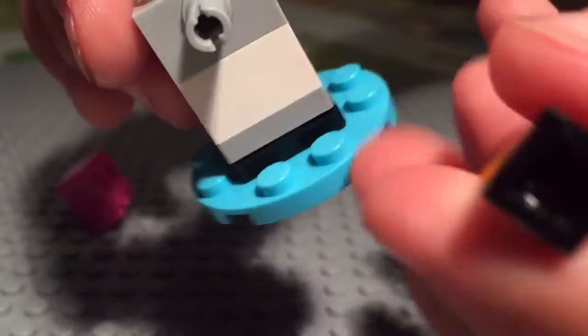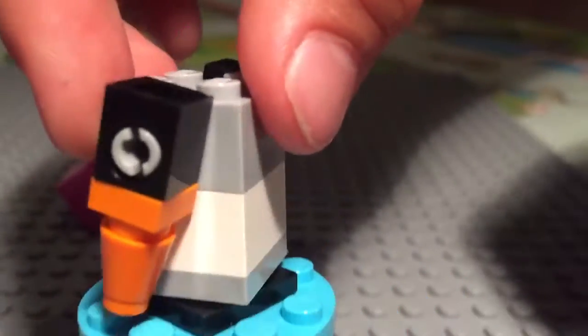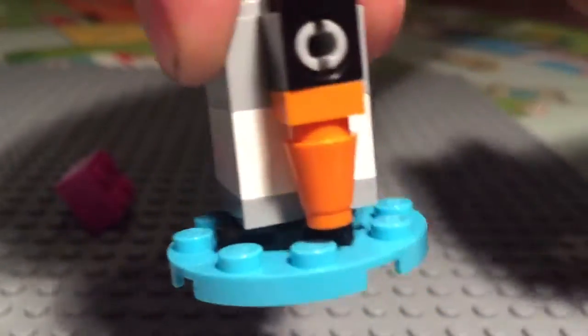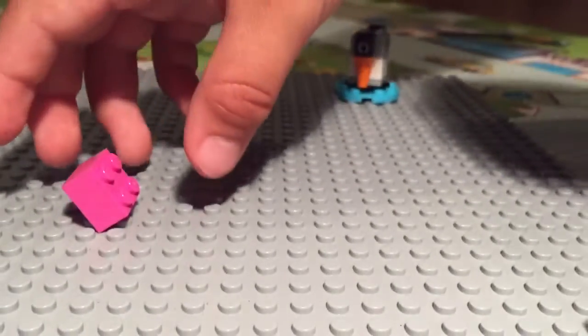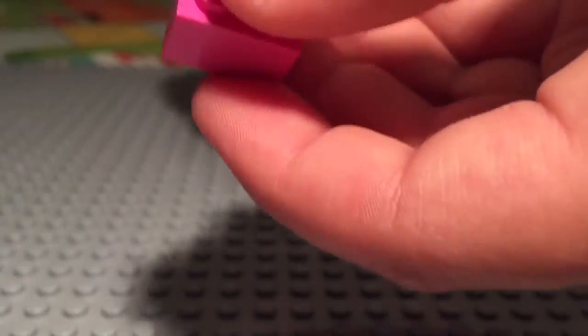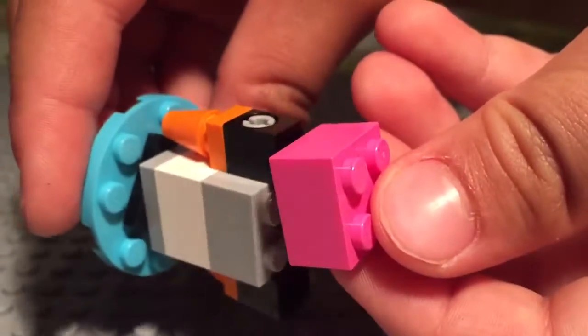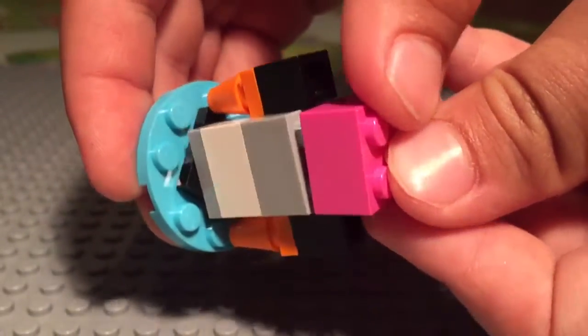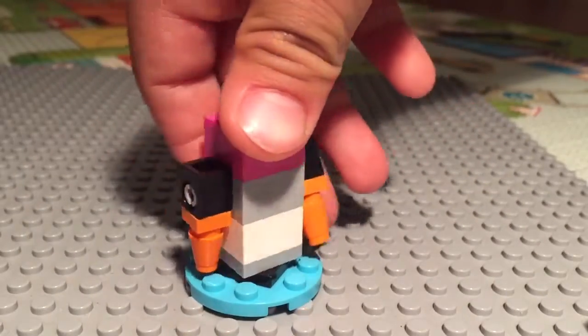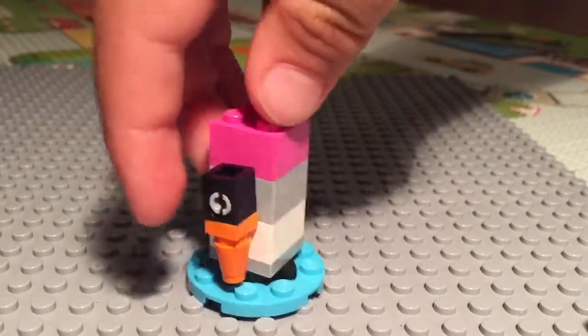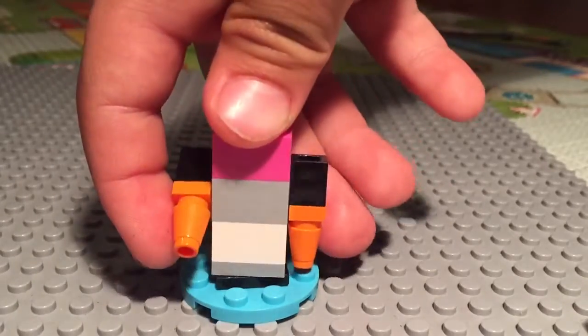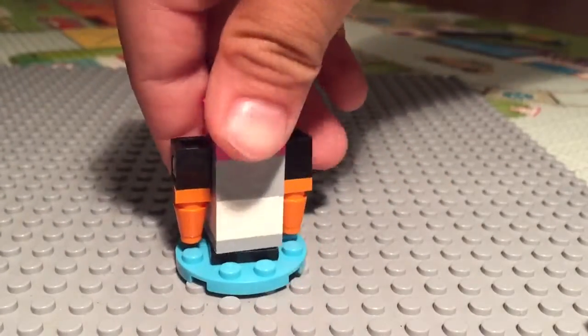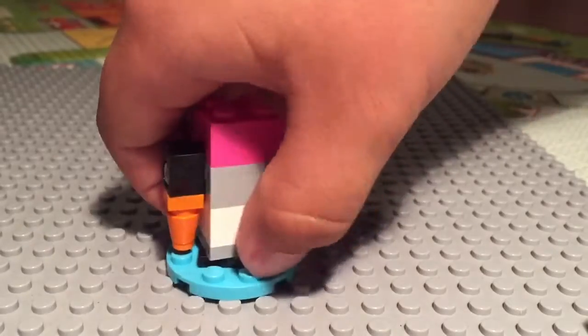Finally, you get this bit and put it on top like that. Then you're finished! You get this little robot who can spin around, move his hands up and down. Thanks for watching, see you later, bye!